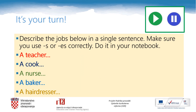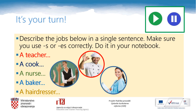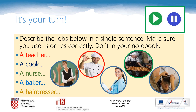Now it's your turn to describe the jobs. Describe the jobs below in a single sentence. Make sure you use S or ES correctly. Let's look at the jobs: a teacher — what does a teacher do? A cook — what does a cook do? A nurse — what does a nurse do? A baker — what does a baker do? A hairdresser — what does a hairdresser do? Open your notebooks, copy the jobs, and describe every job in one sentence. Don't forget to use S or ES. While you are copying the words and writing down the sentences, you may pause the video.